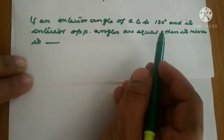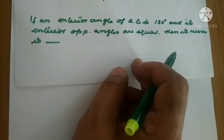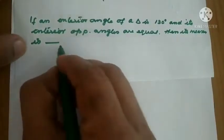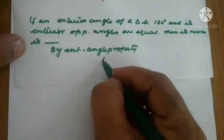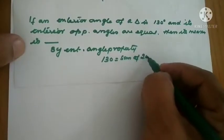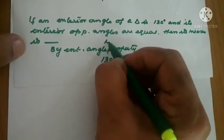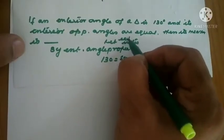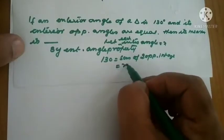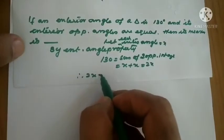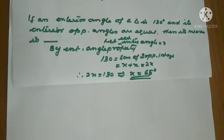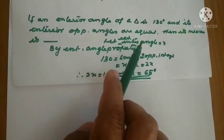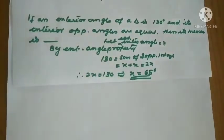If an exterior angle of a triangle is 130 degrees and its two interior opposite angles are equal, find each measure. By exterior angle property: 130 equals the sum of the two opposite interior angles. Let each interior angle equal x. Then x plus x equals 2x equals 130, therefore x equals 65 degrees. Each interior angle equals 65 degrees.